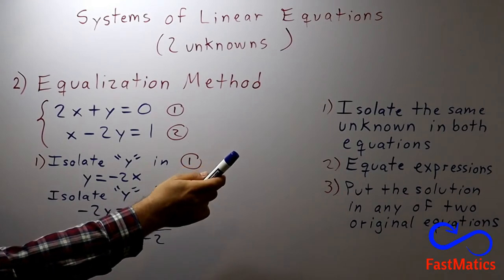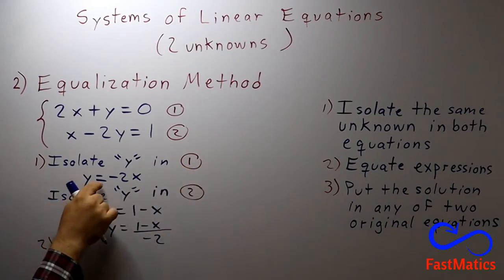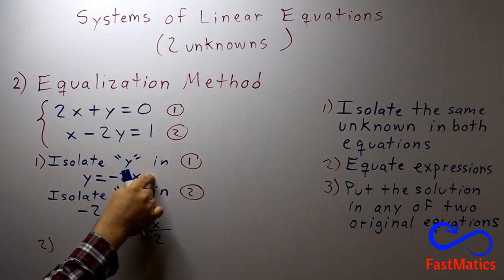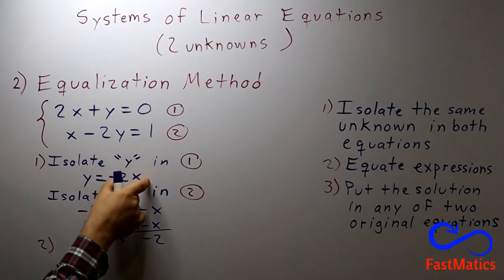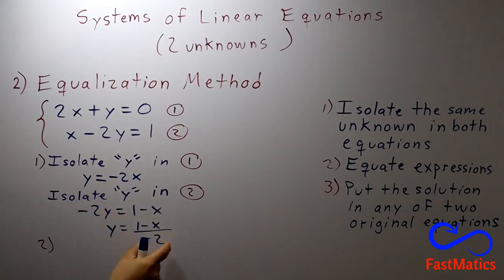Equate expressions. So if y equals negative 2x, and if y equals 1 minus x divided by negative 2, this expression must be equal to this expression. Then I will equate both expressions.